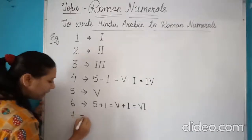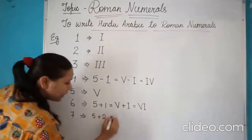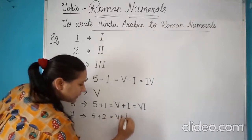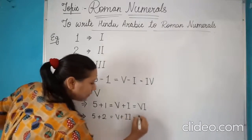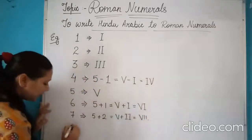Similarly, if you have to write 7, then it is 5 plus 2 and so it is V plus I plus I. So that will become 7, the symbol of 7 like this.